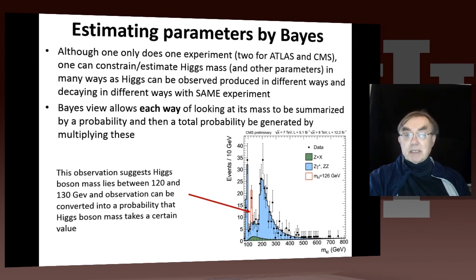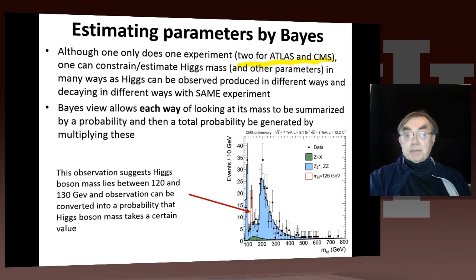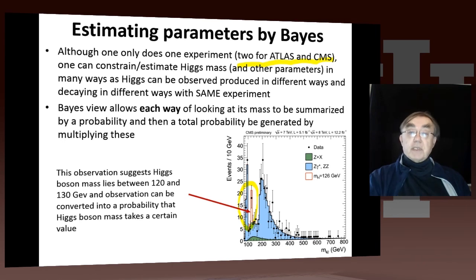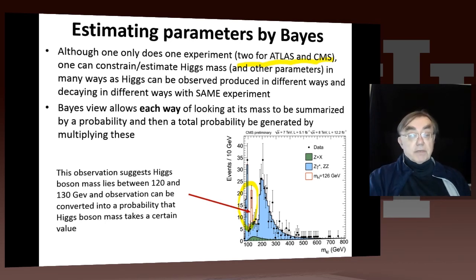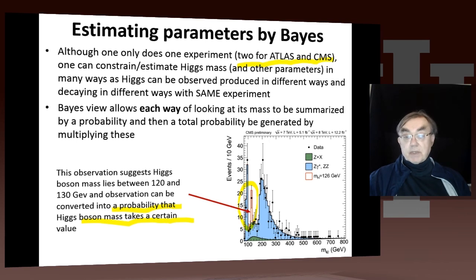We do one experiment — or in fact two, for a different reason. But even in that one experiment, we can observe the Higgs mass in multiple ways: we can look at its two-photon decay and the four-lepton decay. The Bayesian view allows us to take these two totally independent observations of the Higgs mass — independent because they are different final states — and combine them to produce a better value for the Higgs mass. The result is a Higgs mass with a probability distribution: a width of 2 GeV centered at 126 GeV.